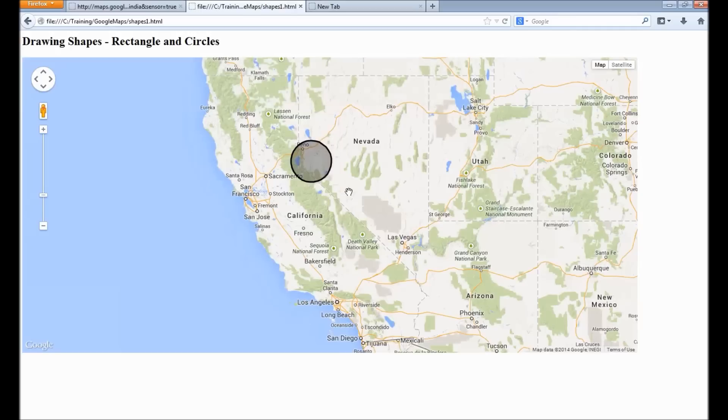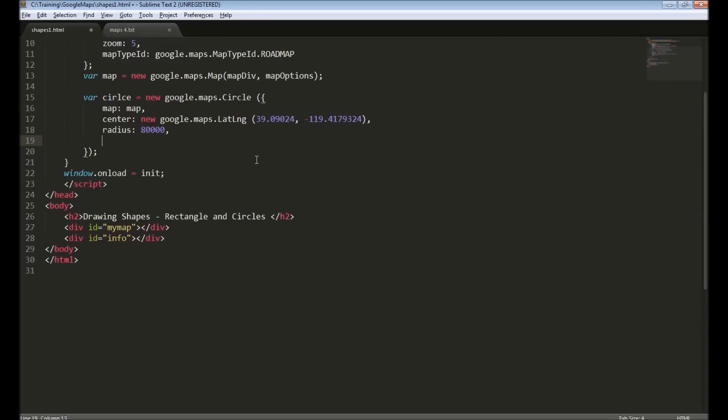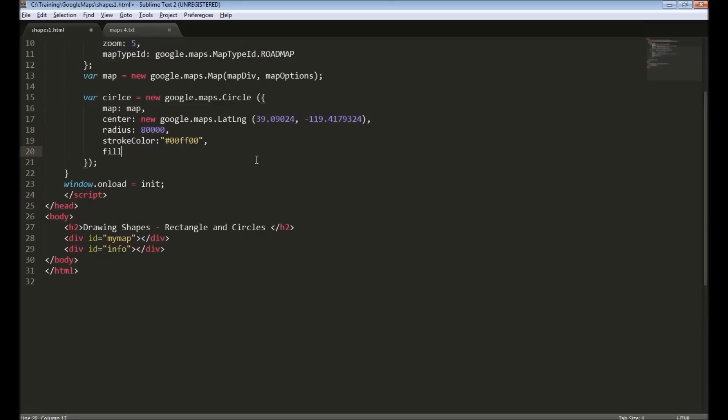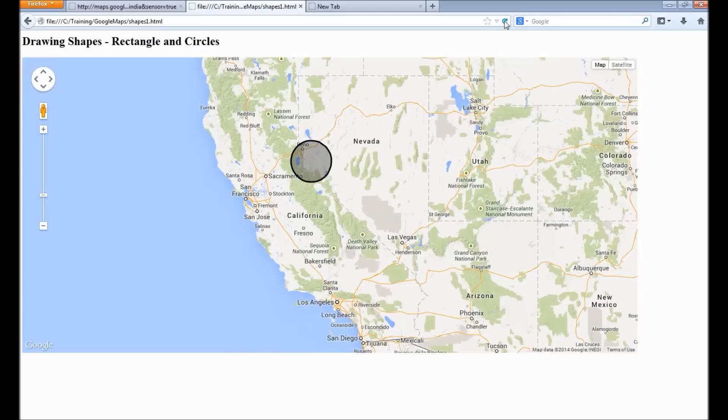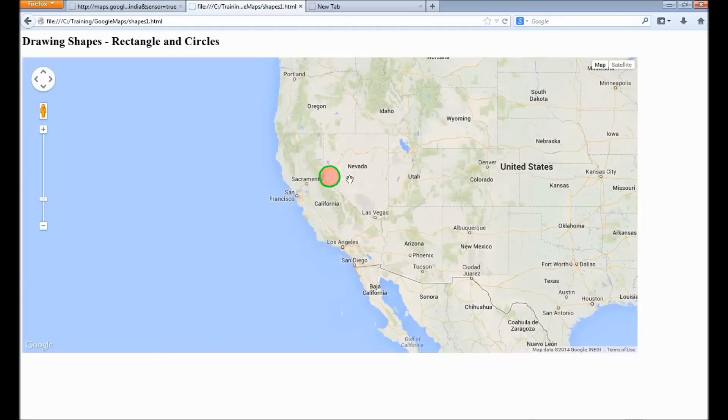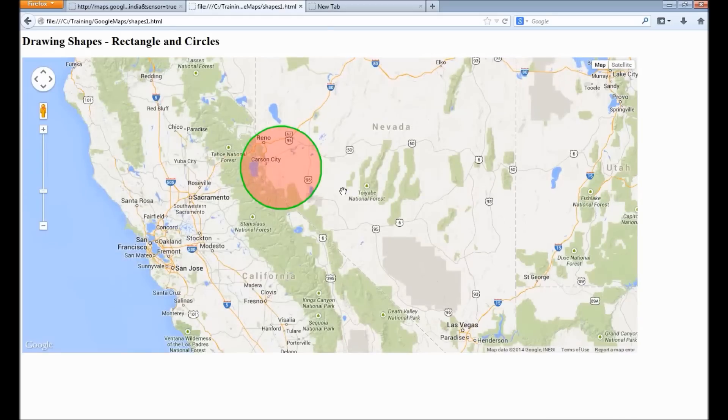You can see the circle, using a default color for the fill and the stroke. You can customize this similar to rectangle. You can provide stroke color and fill color. You can also provide the weight of the stroke color - that means what's the size of the border - and also you can specify the opacity. So we see the border is green and the fill is red and it has some default opacity.